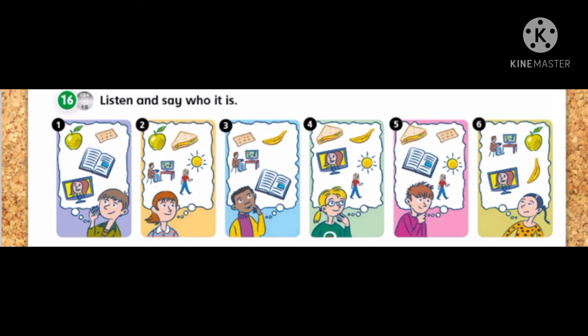Number 3. He wants a biscuit and a banana. He wants to read a book and play on his computer. It's number 3.